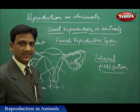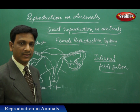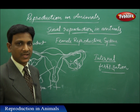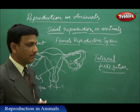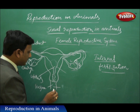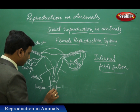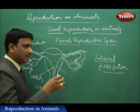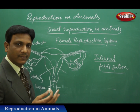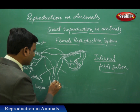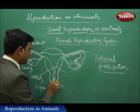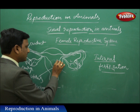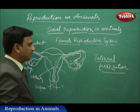These animals have special arrangements by which the male gametes enter the female's body. By the process of mating, the male cells enter the female reproductive system through the part called the vagina. Because of the structural features of the sperm cell - head, middle piece, and tail - it travels in the female reproductive system and reaches the fallopian tube.